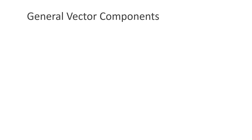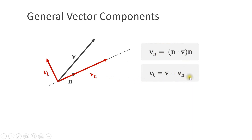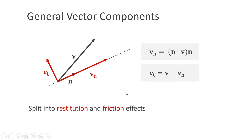A third important use case is to compute general vector components. Let's say we have a vector v and we want to compute its component along a direction defined by a unit vector n. To compute this, we measure the length of v in the direction of n and multiply n by this length to get the vector vn. We can compute the perpendicular component by simply subtracting vn from the original vector v. Such a decomposition is important to handle restitution and friction effects.